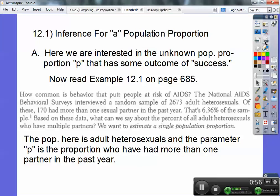So the population here is adult heterosexuals and the parameter, P, is the proportion who have had more than one partner in the past year.